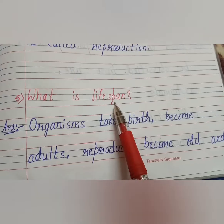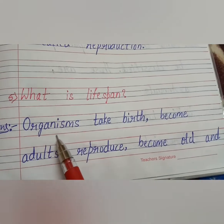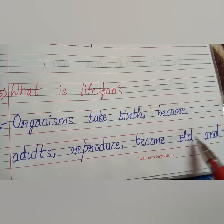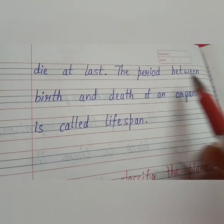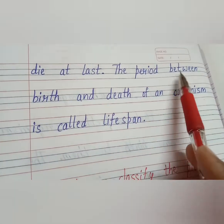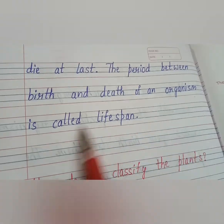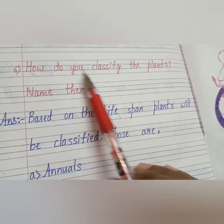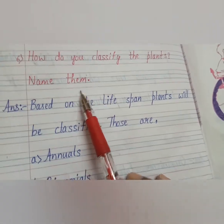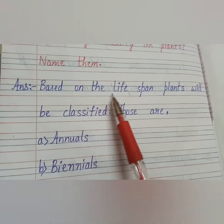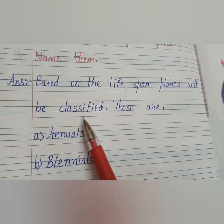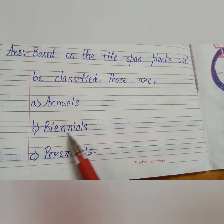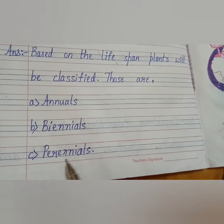Fifth question: what is lifespan? Organisms take birth, become adults, reproduce, become old, and die. The period between birth and death of an organism is called lifespan. Sixth question: how do you classify plants? Based on lifespan, plants are classified as annuals, biannuals, and perennials.